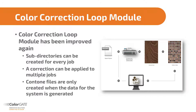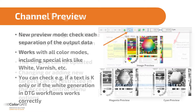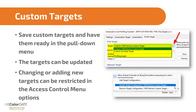The ColorCorrectionLoop module has also been improved. You can now create subdirectories for each job. Corrections can be applied to multiple jobs and Contone files are now only created when the system files are generated. The new preview of individual color channels simplifies your color management — you can view the color separation individually for all primary colors, including spot and special colors. For example, you can check whether a white underbase has been created correctly. You now also have the option to save individual targets and access them in the pull-down menu. The targets can be updated, and access can be restricted via the Access Control module.